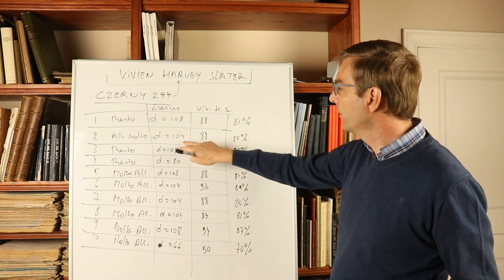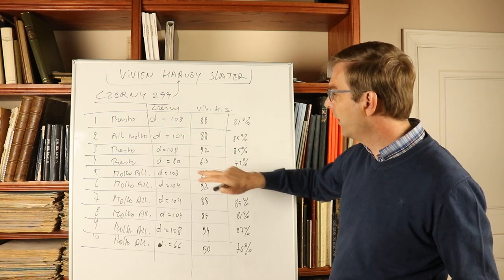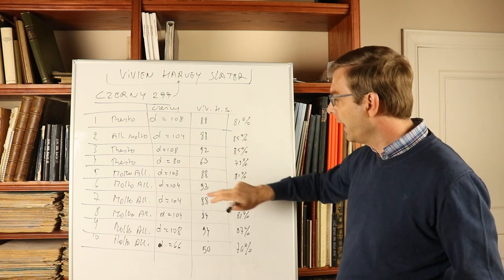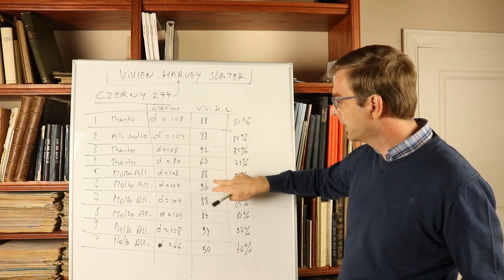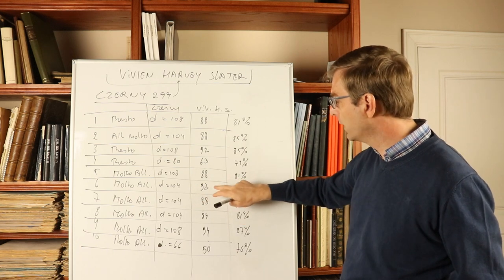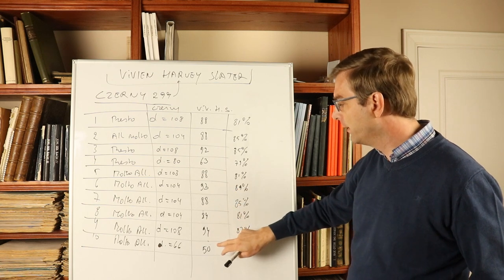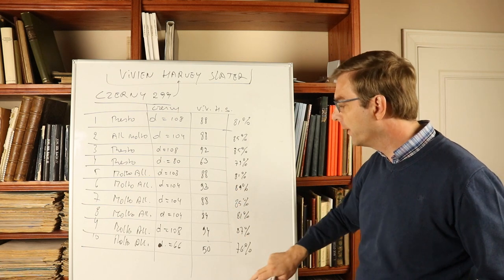But her tempi are actually way below Czerny's indication if you consider Czerny's single beat. So: 108, 88, 104, 88, 92 instead of 102, that's actually a very high number. 63 instead of 80, 88, 93 instead of 104, that's the highest number she reaches in percentages. 88, 84, 94, also very high, and 50.